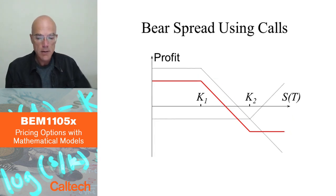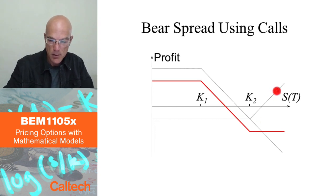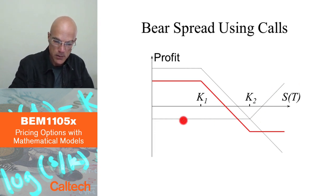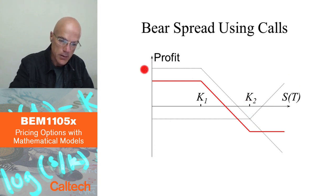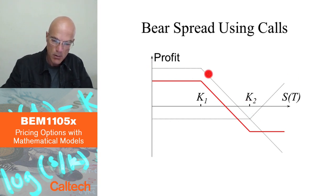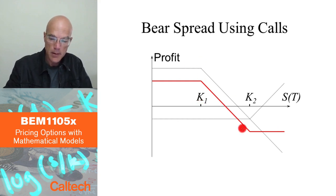For a bear spread using calls, from the picture: there is a long call with strike price K2 — you buy that one — and a short call with strike price K1 — you sell that one. That would also create the bear spread payoff.